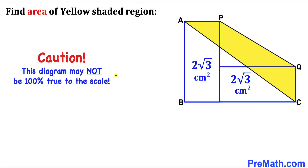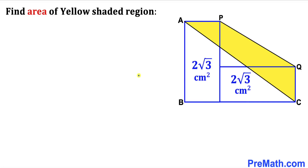Please note that this figure may not be 100% true to scale. Let's get started with the solution. Let's focus on these two rectangles and label their sides. Let me call the side length of this rectangle as A and its width as lowercase B.